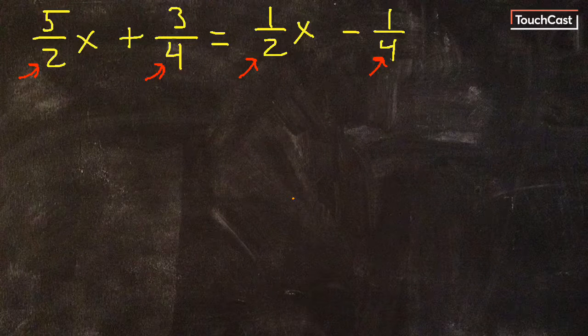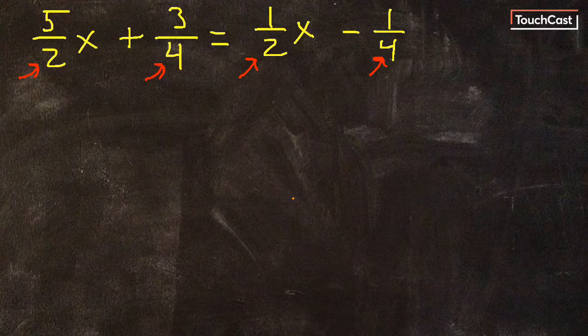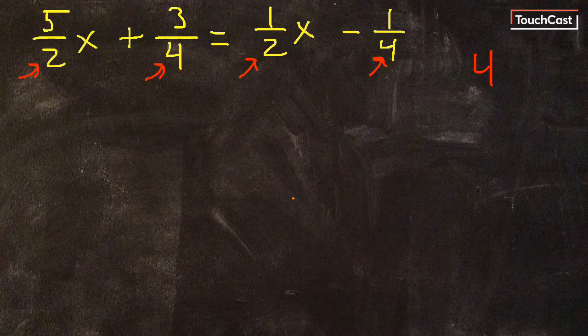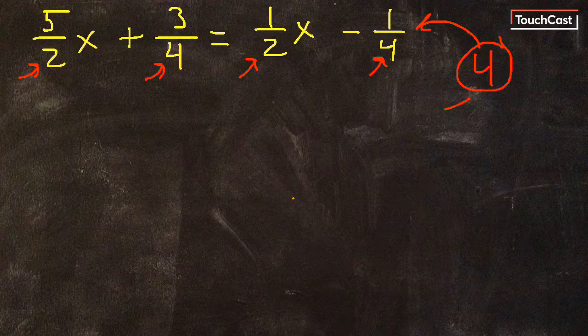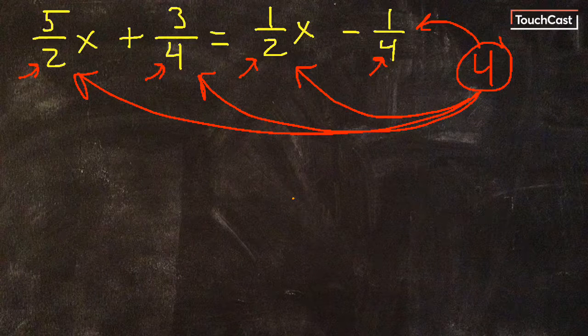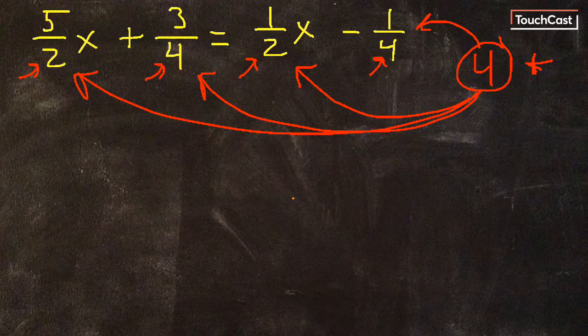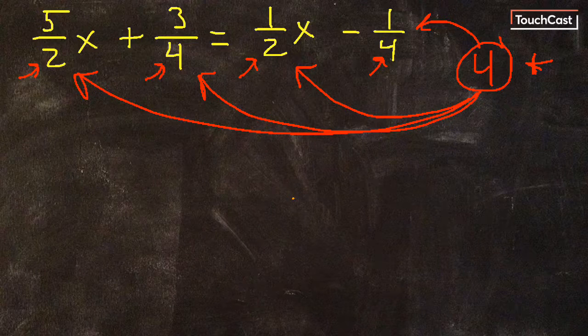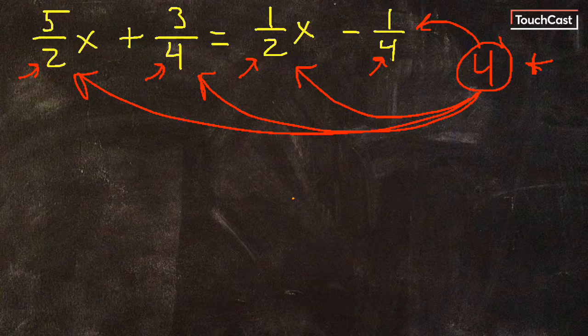Conveniently they're all 2's and 4's. What you want to do is take the bottom number that's the largest, which would be 4. 4 is the largest. And multiply 4 to every fraction. So we're going to multiply it to 1/4, 1/2, 3/4, and 5/2. When you multiply that 4 to each fraction, or whatever the largest number is in the bottom part of the fraction, you are going to conveniently get a whole number or an integer.